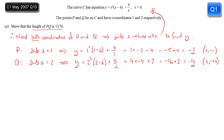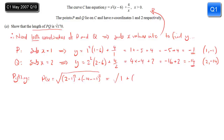Now that we know the coordinates, we can use the standard method based on Pythagoras' theorem to work out the distance PQ. It's going to be the square root of: subtract the x values, 2 minus 1, square that; subtract the y values, minus 14 minus minus 1, and square that. Because this is a 'show that', I won't miss out any steps. So 2 minus 1 squared is 1. Minus 14 minus minus 1 is minus 13, so minus 13 squared gives 169. In the brackets that becomes 1 plus 169, which is the square root of 170. We've shown that the length of PQ is root 170.